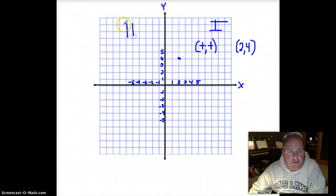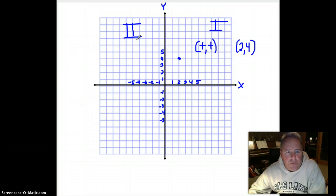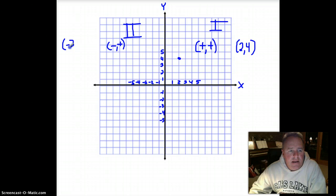Quadrant two is going to have what we call a negative positive ordered pair. For example, negative three, comma, five.